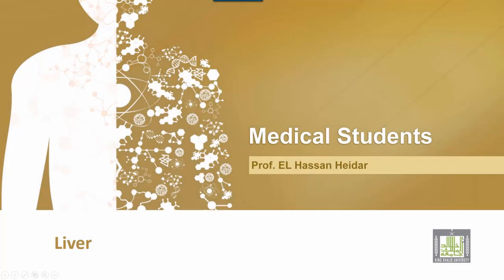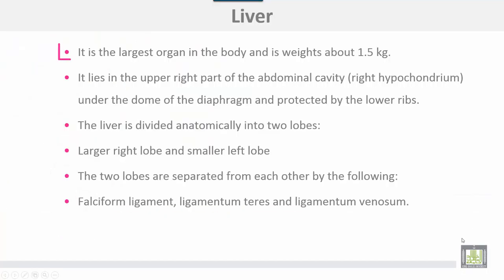The liver is the largest organ in the body, weighing about one and a half kilograms. It lies in the upper right part of the abdominal cavity, or right hypochondrium, under the dome of the diaphragm, and is protected by the lower ribs.